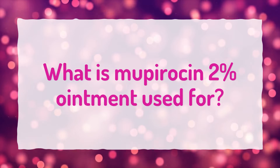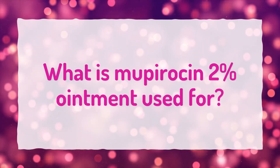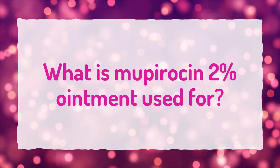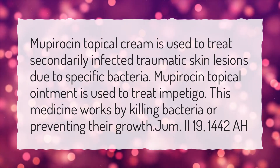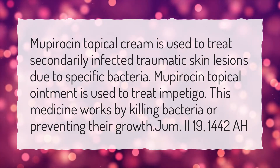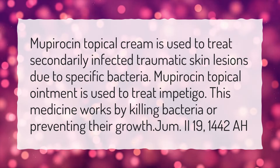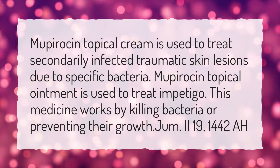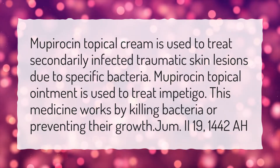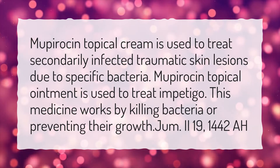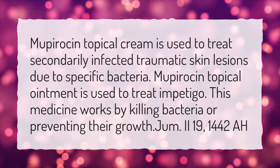What is Mupiracin 2% ointment used for? Mupiracin topical cream is used to treat secondarily infected traumatic skin lesions due to specific bacteria. Mupiracin topical ointment is used to treat impetigo. This medicine works by killing bacteria or preventing their growth.